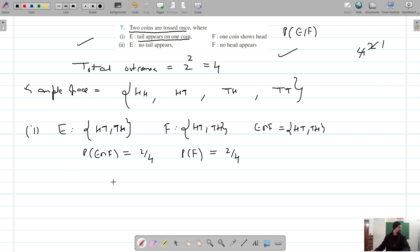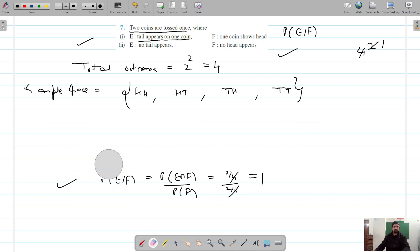This gives us the probability of E given F equals P(E∩F) divided by P(F), which is 2/4 divided by 2/4, that equals one. So that is the probability of E given F in the first case. Let's move on to the second part.